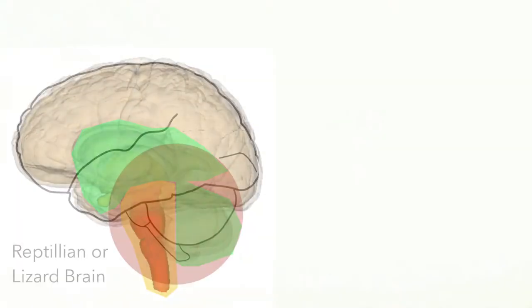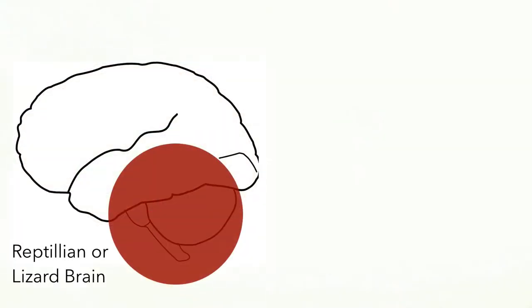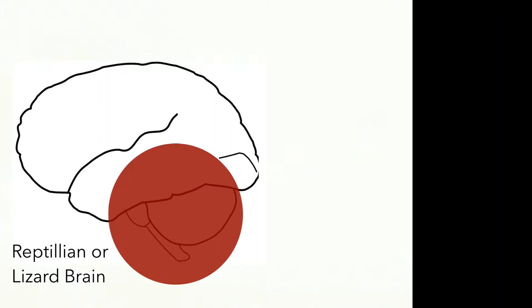The old brain, also called the reptilian or the lizard brain, refers to that part of the brain that fishes and reptiles also have.